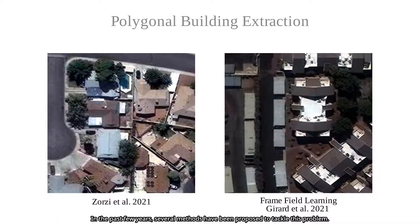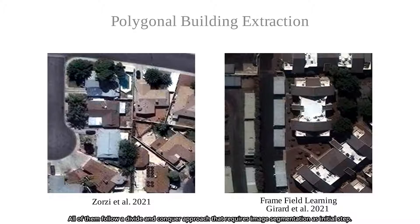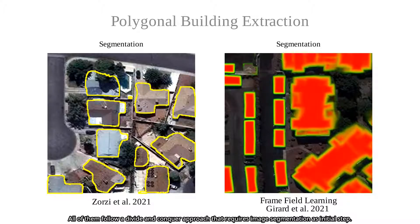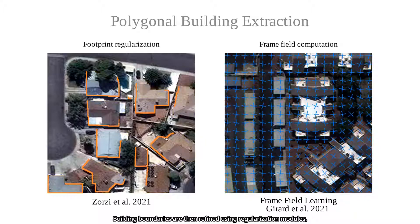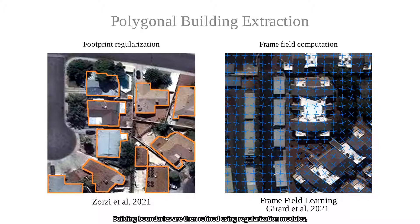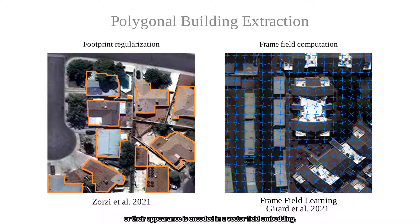In the past few years, several methods have been proposed to tackle this problem. All of them follow a divide-and-conquer approach that requires image segmentation as an initial step. Building boundaries are then refined using regularization modules, or their appearance is encoded in a vector field embedding.